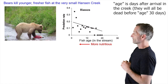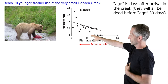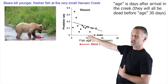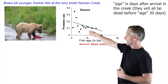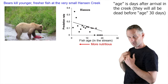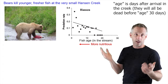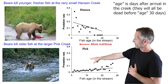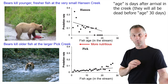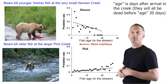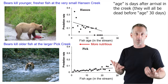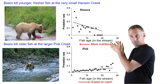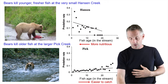We tested that prediction in two locations in the Wood River Lakes: Hanson Creek, where the catching was easy, and Pick Creek, which is considerably deeper. At Hanson Creek, bears really target the energy-rich fish, so predation rate is high on newly arrived fish and much lower as fish age. At Pick Creek, where bears can't catch fish so easily, predation rate is very low on newly arrived fish because they can escape, but it increases as fish get older because they've lost their energy and can't avoid bears.